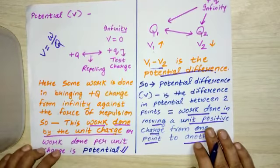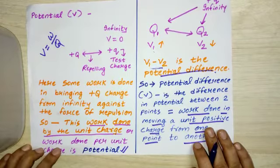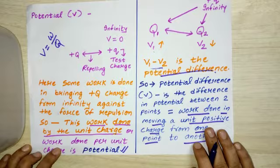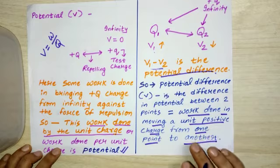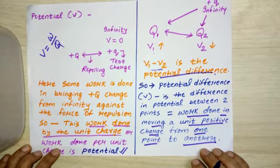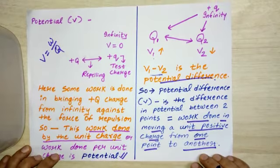In potential, it's simply work done per unit charge. Work done per unit charge is potential, and work done per unit charge in moving a charge from one point to another is called potential difference.